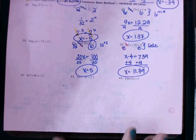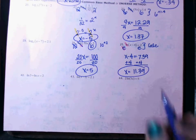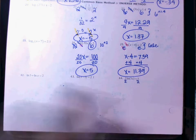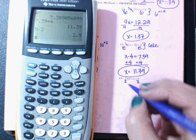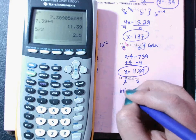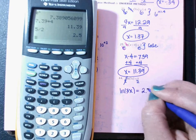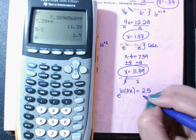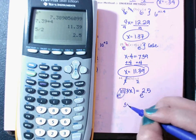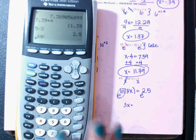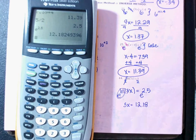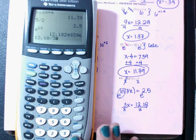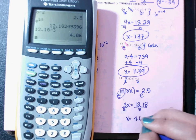Let's do number 44. Before you can solve, divide by 2 on both sides. Five divided by 2 — these cross out — giving ln of 3x equals 2.5. Then to get rid of the ln, e both sides: e and ln cross out, 3x comes down, and e to the 2.5 gives 12.18. Then divide by 3 on both sides: 12.18 divided by 3 gives x equals 4.06.